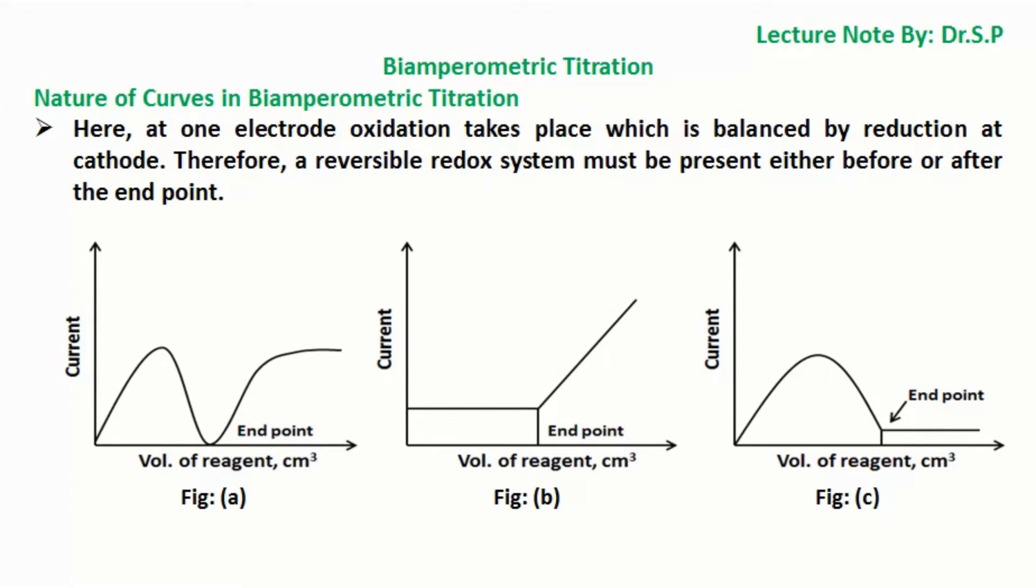Curve B represents a case where an irreversibly behaving system such as arsenic acid is titrated against a reactant which behaves reversibly. Here, no current passes till the end point is reached. Beyond the end point, the current rises in proportion to the concentration of iodine solution.